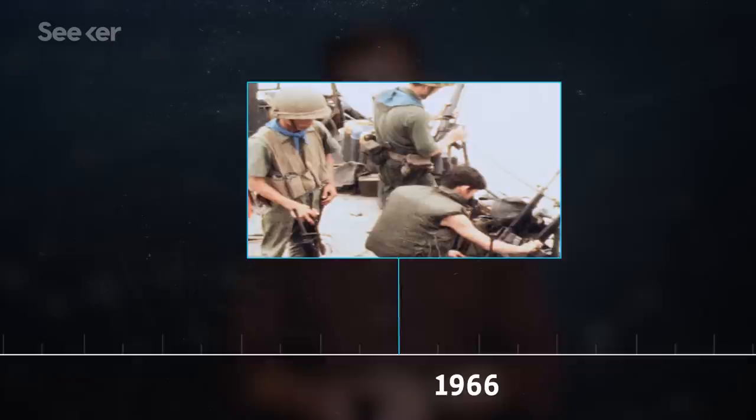By 1966, the Army and Marine Corps were issuing the rifle to troops in Vietnam under its new name, the M16. And then in 1977, Stoner's patent expired.